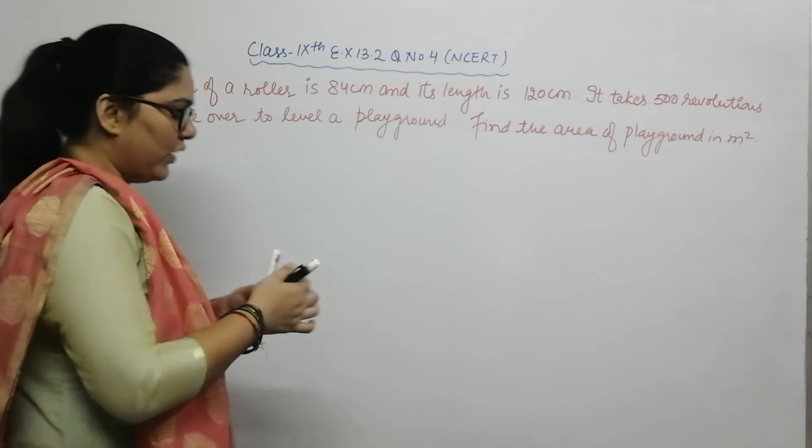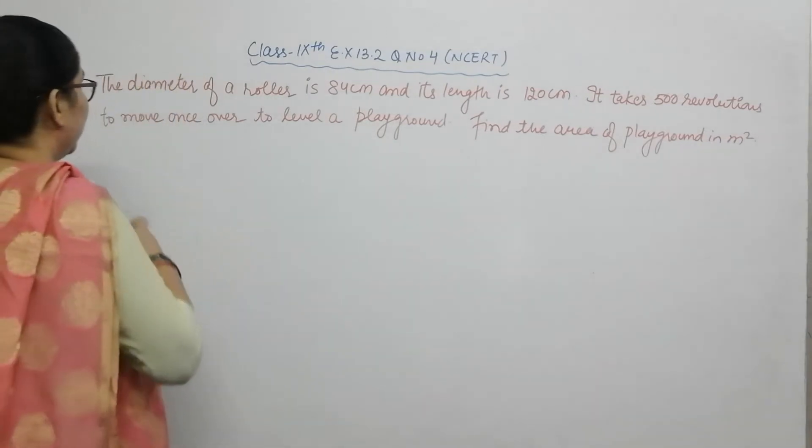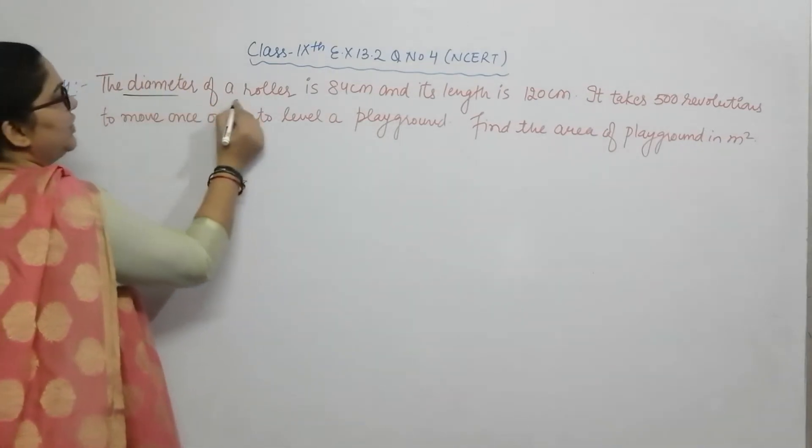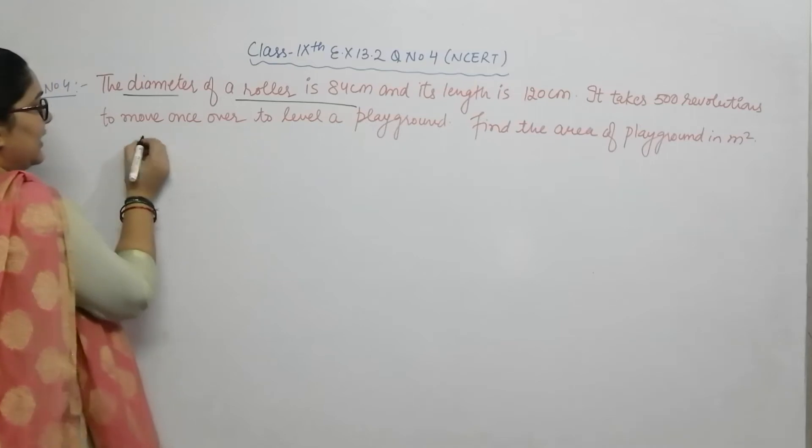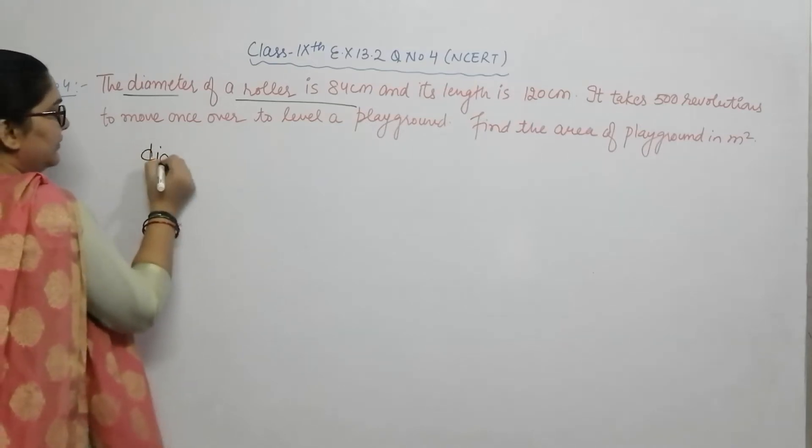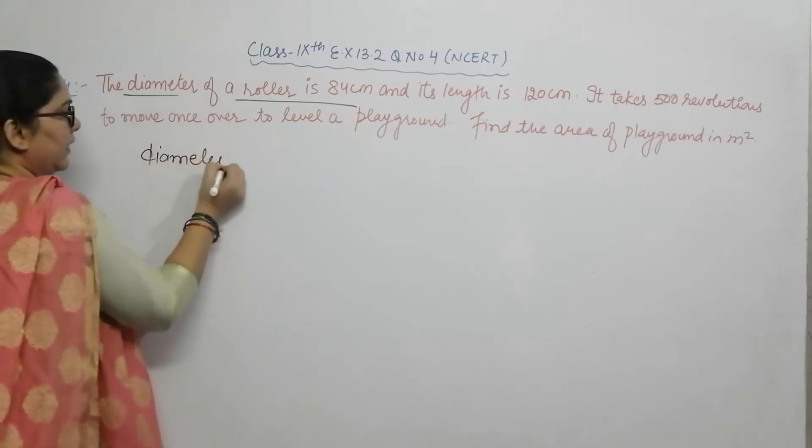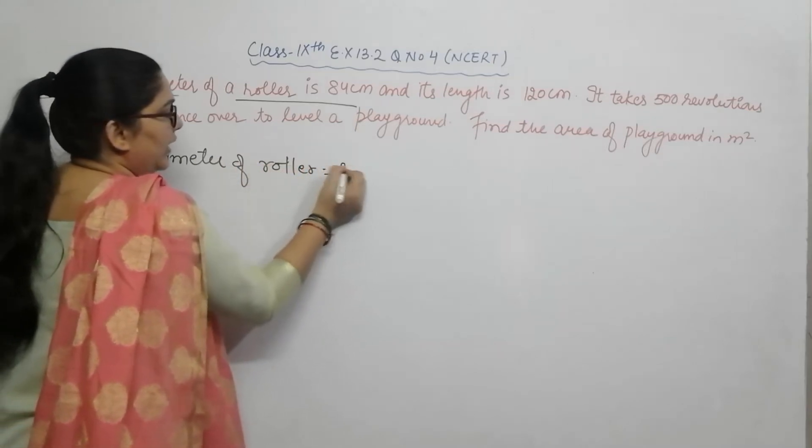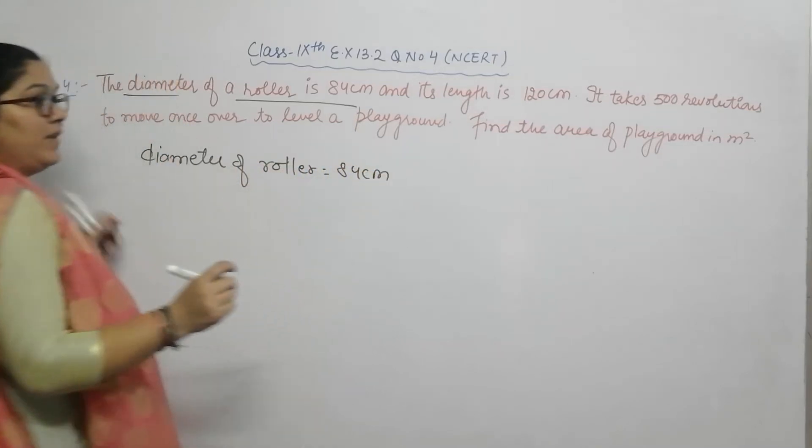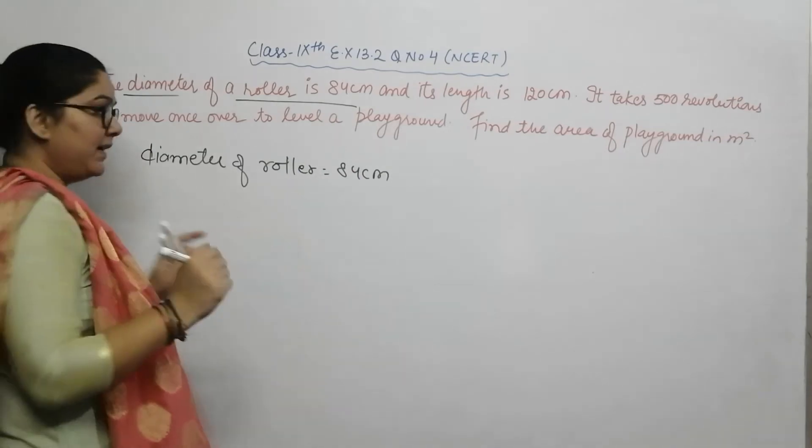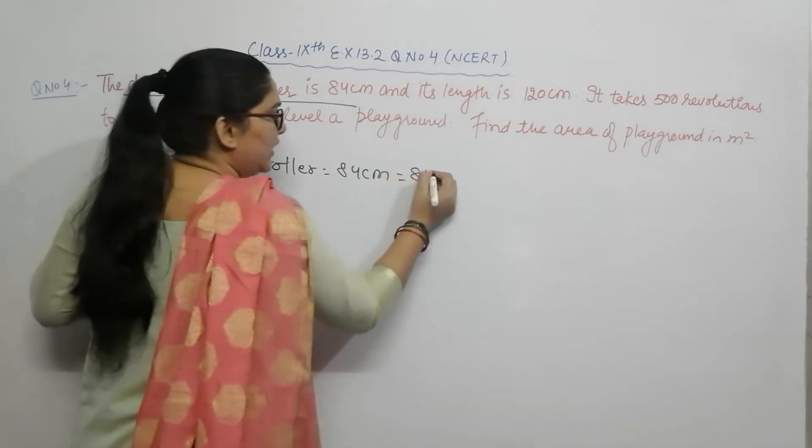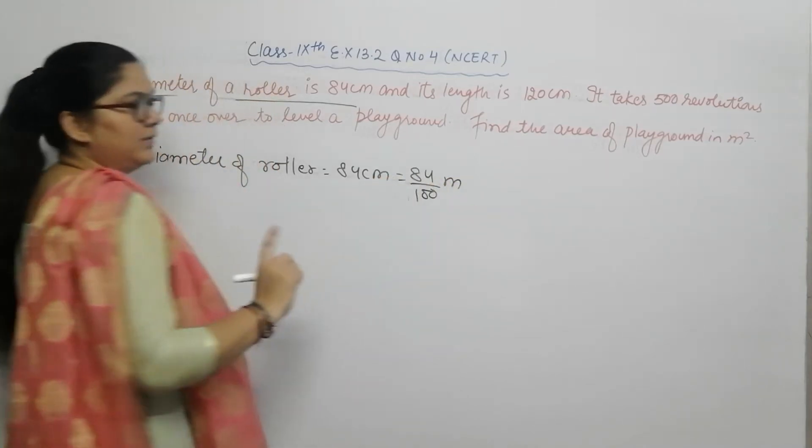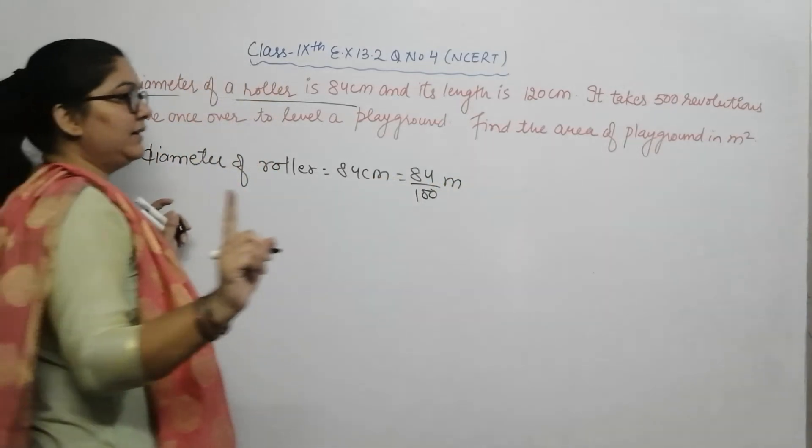Let's start the question. The diameter of the roller is 84 centimeter. Now we have to change this value to meters, so it is equal to 84 by 100 meter, because 1 centimeter